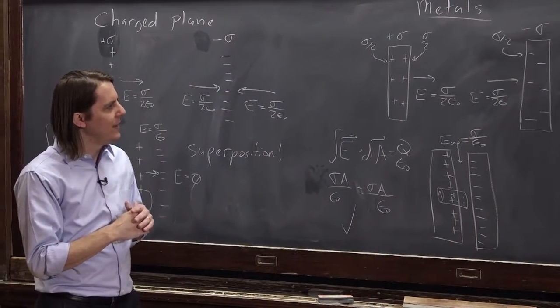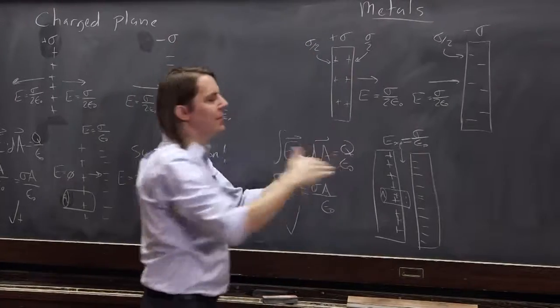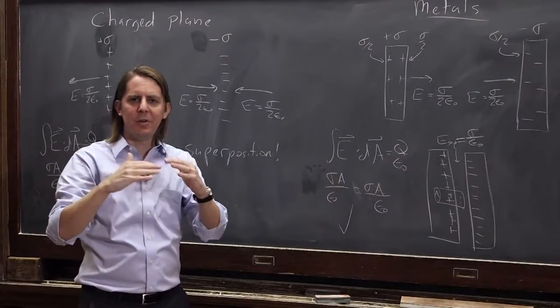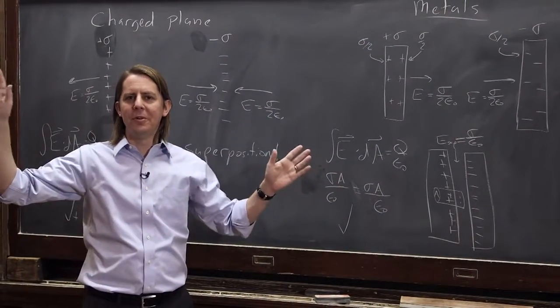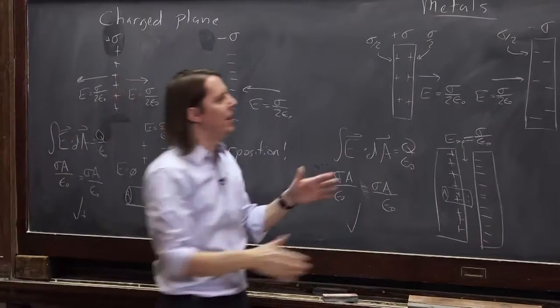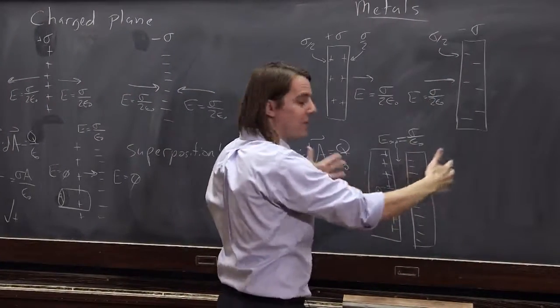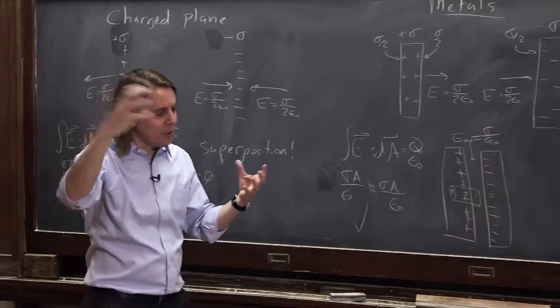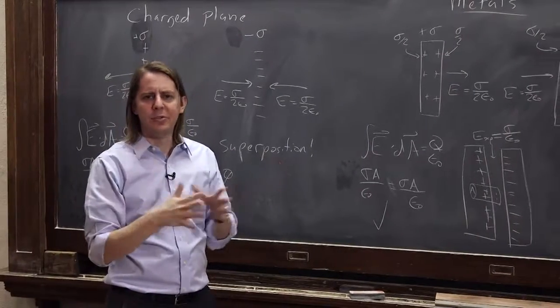But this is right because we learned about how to treat the field at the surface of a charged metal when there's nothing else around. We didn't think about what if something else is nearby. We didn't do it for this thing coming together. When something else comes near the charged metal, then the charge distribution can change.